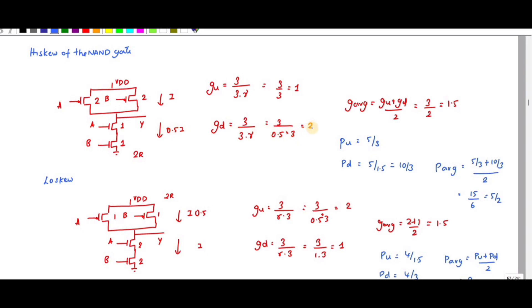If I substitute, I get g_d equals 2. So g_average equals (g_u + g_d) / 2 = (1 + 2) / 2 = 1.5. To determine the parasitic delay, the number of transistors connected to the output — that is 2, 2, and 1 — gives 5. So p_u equals 5/3, and p_average equals 5 divided by 1.5 — that is (p_u + p_d) / 2 = 5/2.